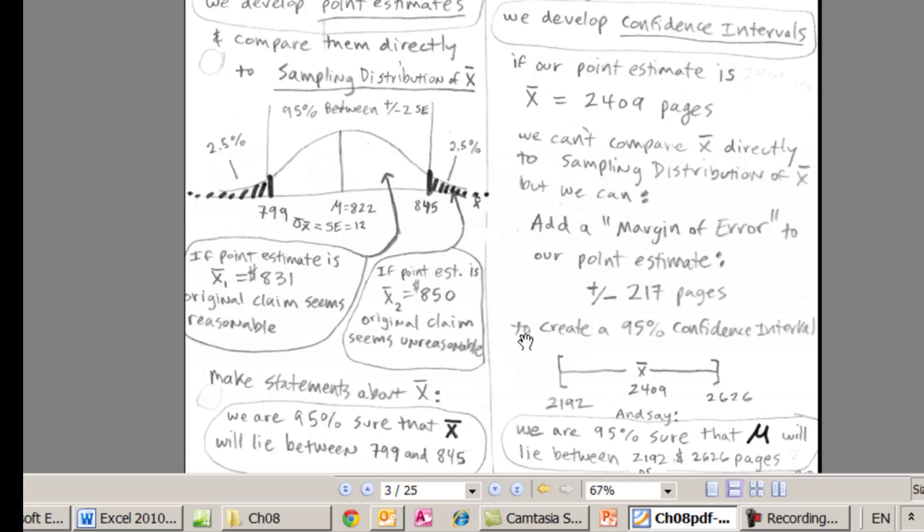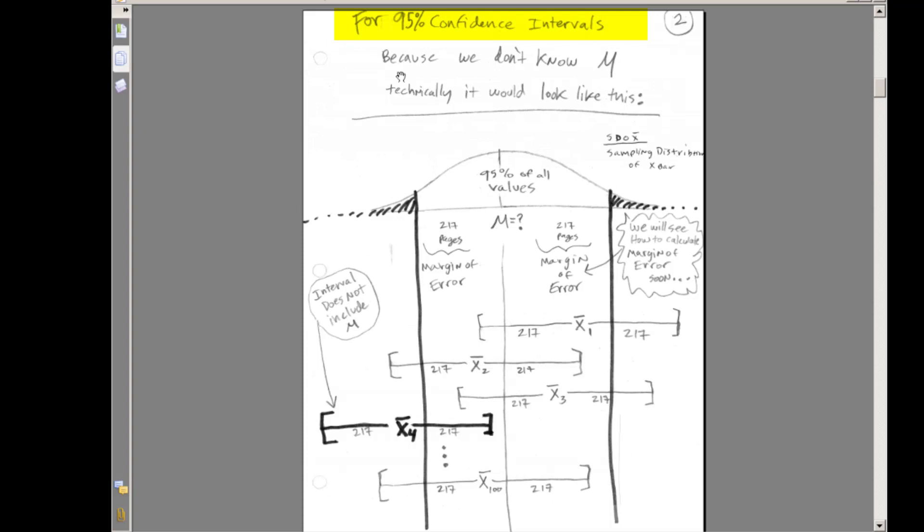The statements we can make in Chapter 8, again, we are 95% sure that mu will lie between the two limits. Back in Chapter 7, we were comparing X bar. 95% sure that mu will lie in our interval here. Let's talk a little bit more about that 95%. We'll go to the next page.